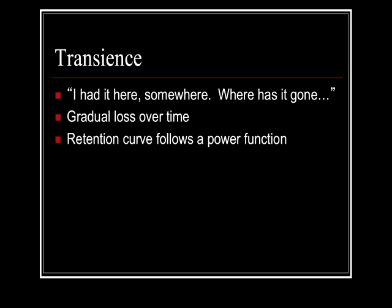Transience is forgetting over time, so transience theory equals decay theory — be sure you've got that connection. It's the idea that you had it somewhere, you used to remember it, but it's lost now. The loss of memory over time follows a power function — that's Ebbinghaus's forgetting function — giving you this fast initial decay of information over time.